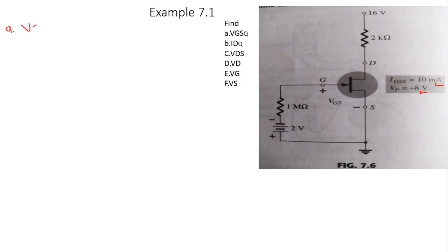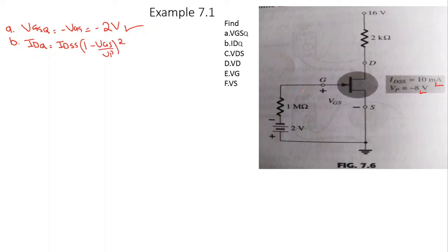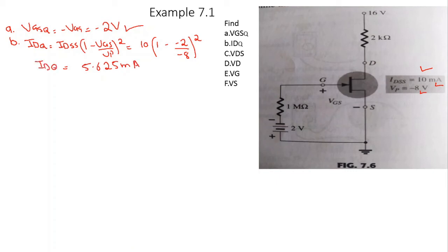First, VGSQ = −VGG = −2 V. Second, the drain current IDQ is given by the Shockley equation: ID = IDSS × (1 − VGS/VP)² = 10 mA × (1 − (−2)/(−8))² = 5.625 mA.